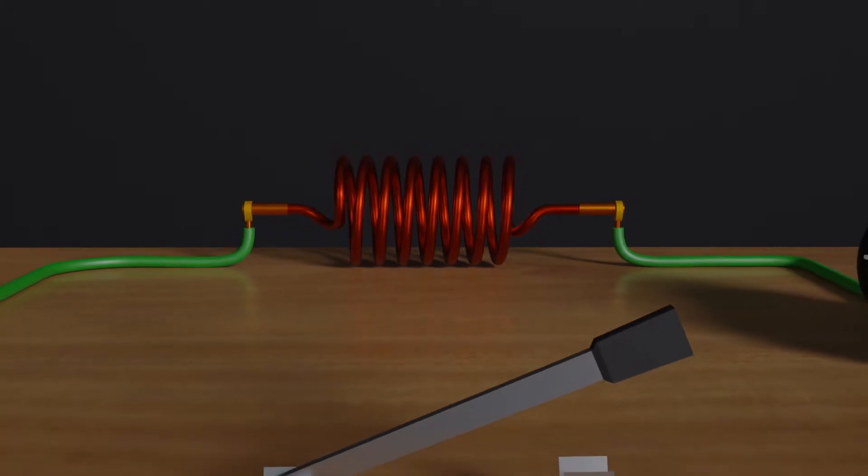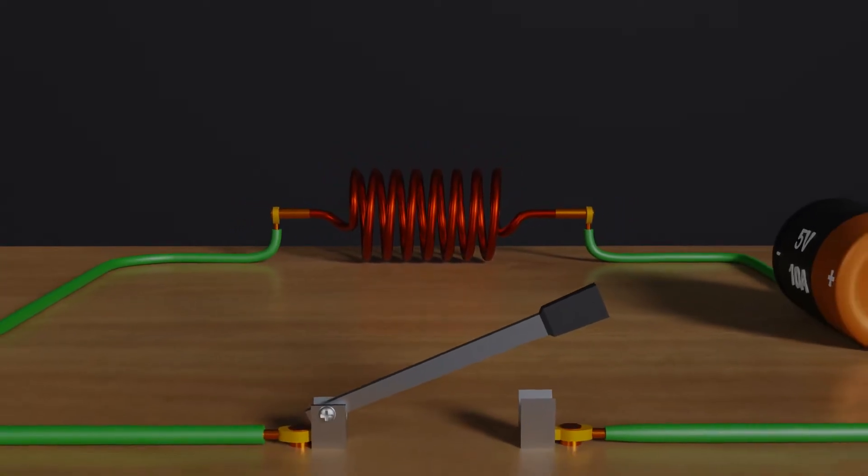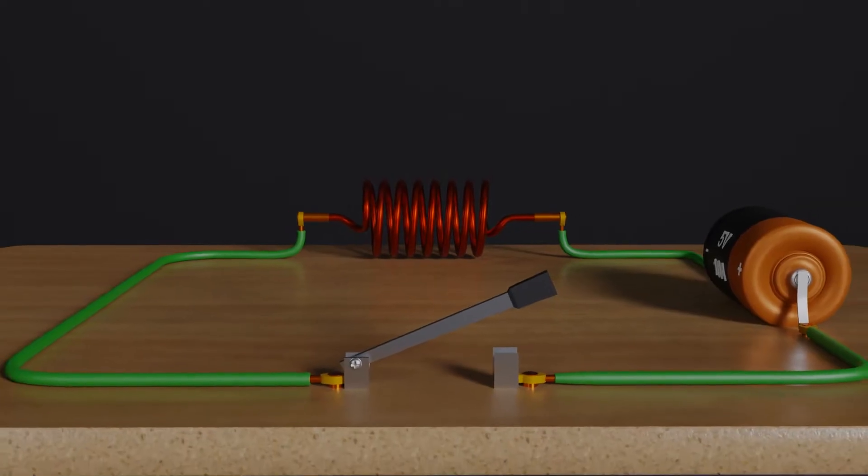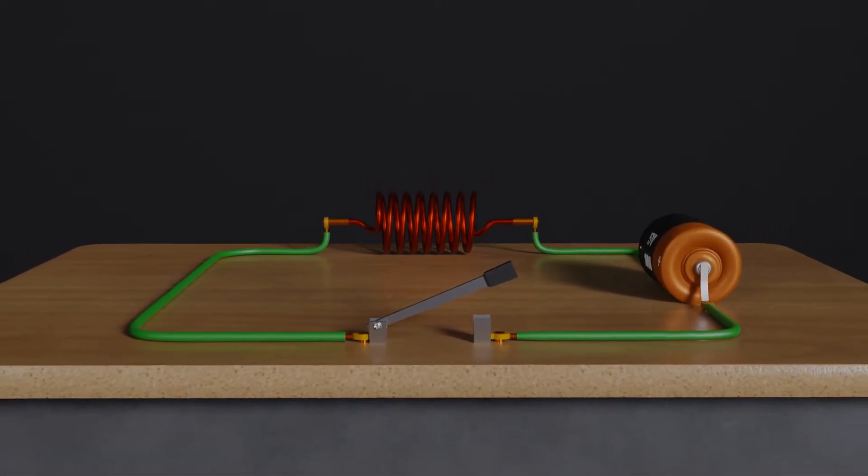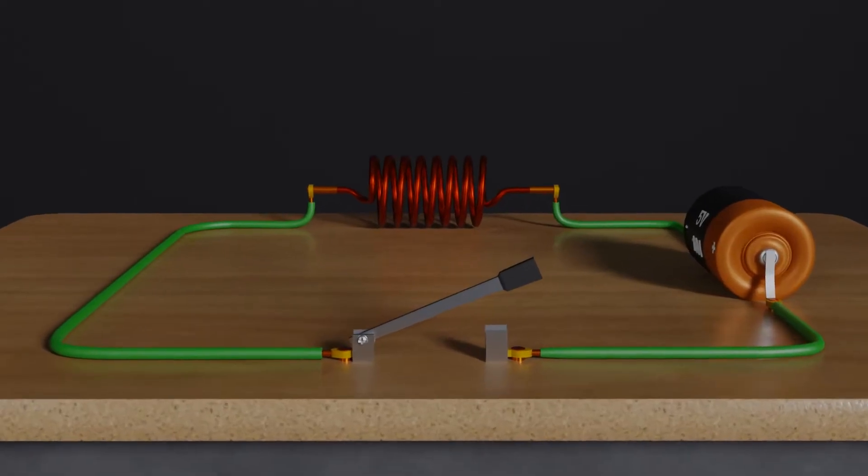Let's repeat the same experiment in slow motion and observe how current and magnetic field come into the picture as we close the circuit by turning on the switch. So let's start visualizing.